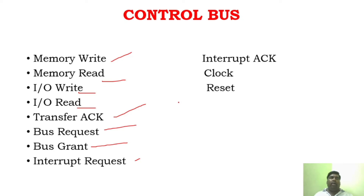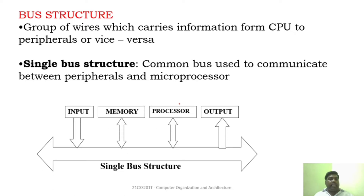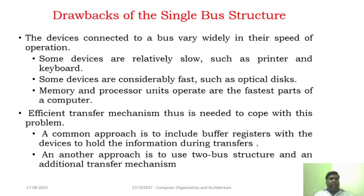This bus structure can be of different types — like single bus structure or double bus structure. Normally, a single bus can be handled by two devices at a time, and only one particular data transfer can take place. Single bus architecture, from the name itself, has a common bus for integrating all devices — input, memory, processor, and all peripherals. It is very simple, and all information is carried through this single bus structure.